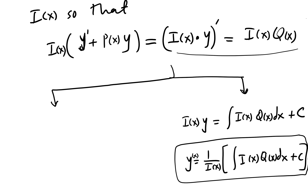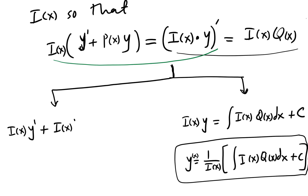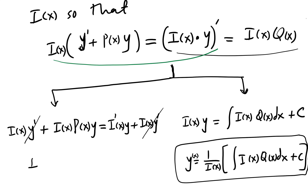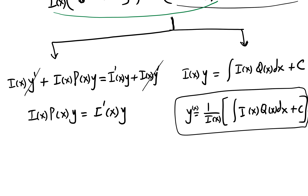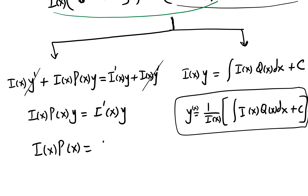The question is: how do we get i(x)? To find i(x), we look at the left-hand side. Distributing i(x) gives i(x)·y' + i(x)·P(x)·y. Applying the product rule to the middle term gives i'(x)·y + i(x)·y'. These cancel, leaving i(x)·P(x)·y = i'(x)·y. Dividing both sides by y gives i(x)·P(x) = i'(x).